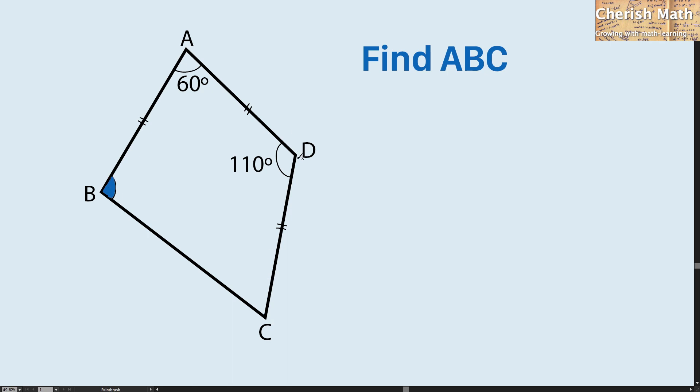There are three sides that are the same length: AB, AD, and DC.